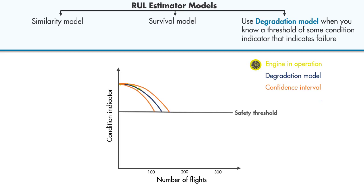This way, we can statistically estimate how many cycles there are until the condition indicator crosses the threshold, which helps us estimate the remaining useful life.